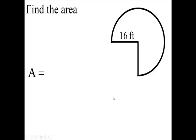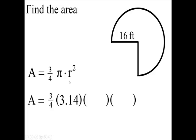So we want the area of three-fourths of a circle. Now the area of a circle is π times r times r—of course we write that r squared. So we have three-fourths, π is 3.14, and r in our case is 16.